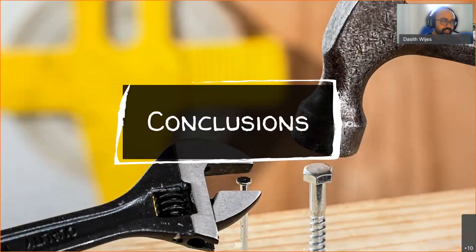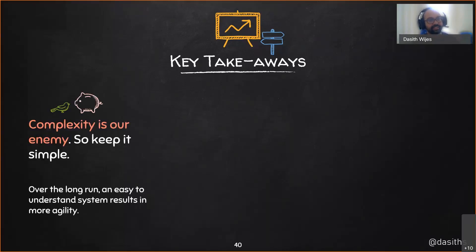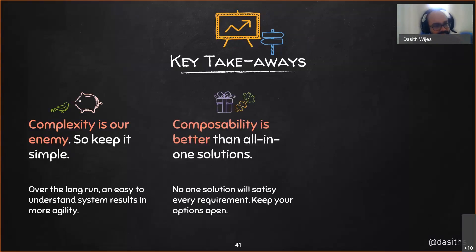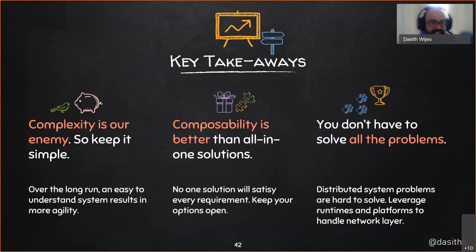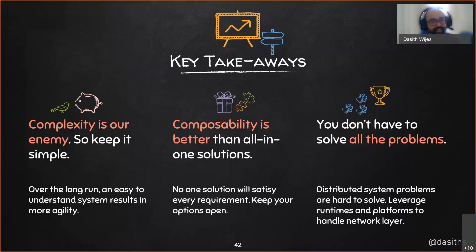So what are the conclusions? Simple solutions are easy to maintain and make sense of. Composable designs allow us to pick the right tool for the job. Stand on the shoulders of giants — leverage runtimes and platforms from industrial giants so you don't have to solve distributed system complexities yourself. Frameworks don't allow us to keep the solution simple as it grows. Aim for a composable solution, and leverage something like DAPR or Knative — there are plenty of options if you do your research.